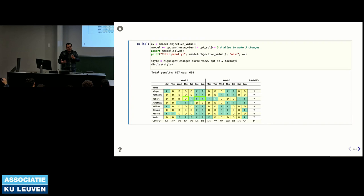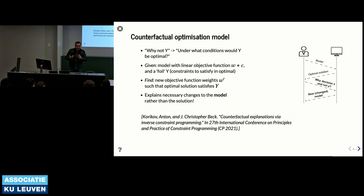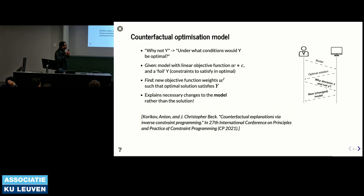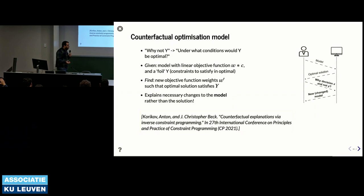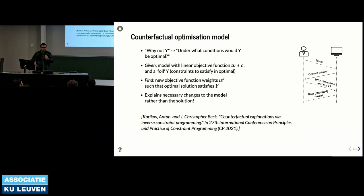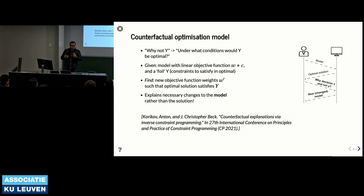To minimize changes, we impose a simple constraint: the nurse view must differ from the optimal solution values at most three times—the sum of differences must be less than or equal to three. Solving with this constraint finds a solution with only three changes, though the penalty is higher. The user can adjust the threshold to balance solution quality against number of changes. This allows slightly changing the solution rather than generating a completely new one.